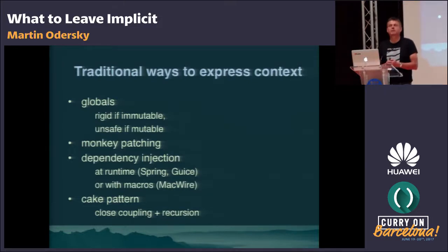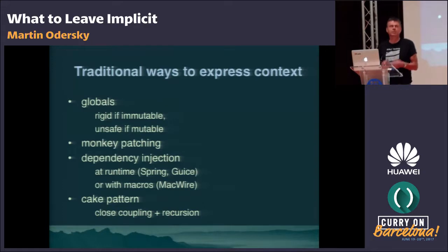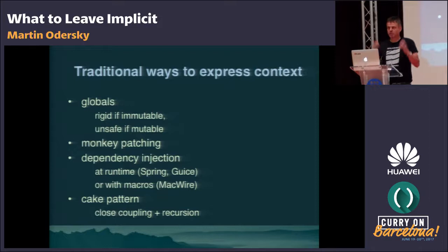Object-oriented programmers thought they could do much better and invented a device called monkey patching. Monkey patching is essentially injecting new behavior into the root class object. It was very popular in early Smalltalk and also in Ruby, and people have come to realize by now that it's a terrible idea for the same pervasiveness — you patch the global object and then everybody else gets to see the same thing.